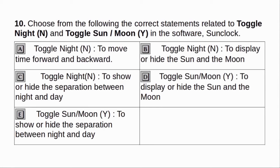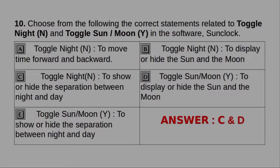Choose from the following the correct statement related to Toggle Night/End tool and Toggle Sun/Moon Y tool in the software SunClock. A. Toggle night/end to move time forward and backward. B. Toggle night/end tool to display or hide the sun and the moon. C. Toggle night/end tool to show or hide the separation between night and day. D. Toggle sun/moon Y tool to display or hide the sun and the moon. E. Toggle sun or moon Y tool to show or hide the separation between night and day. Answer: C and D.